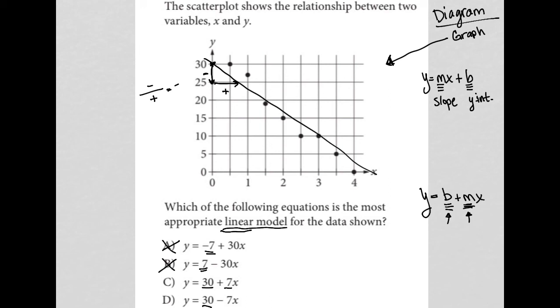Choice C has a positive slope, and this line does not have a positive slope. So C is out and choice D has a negative slope, negative 7. This means choice D is the best answer.